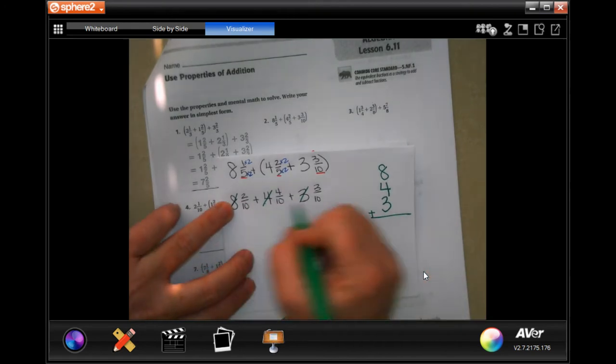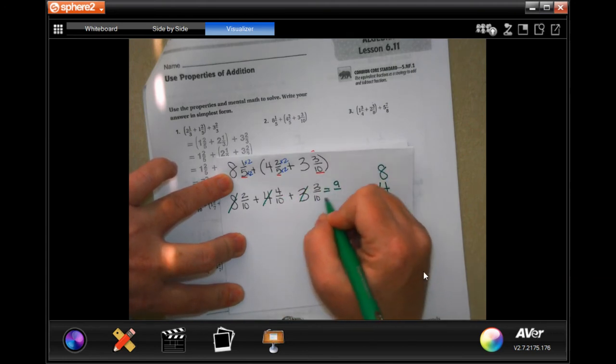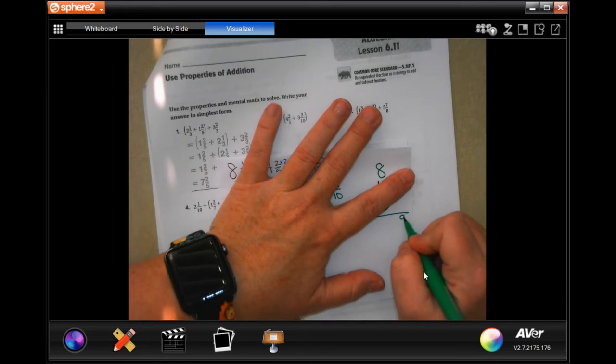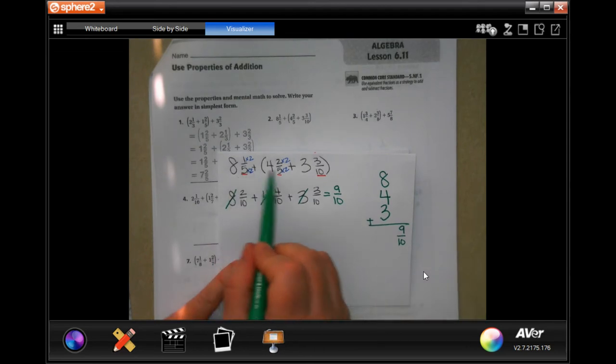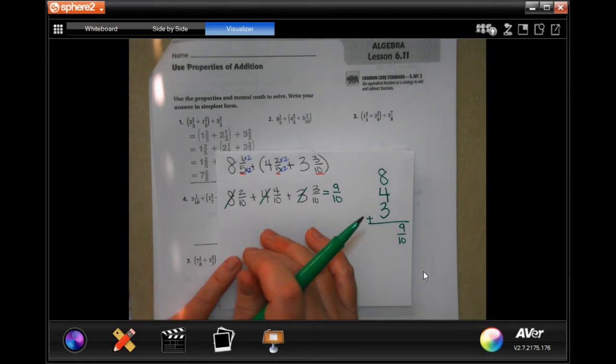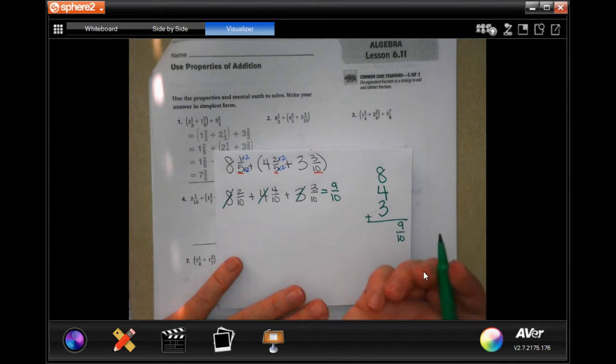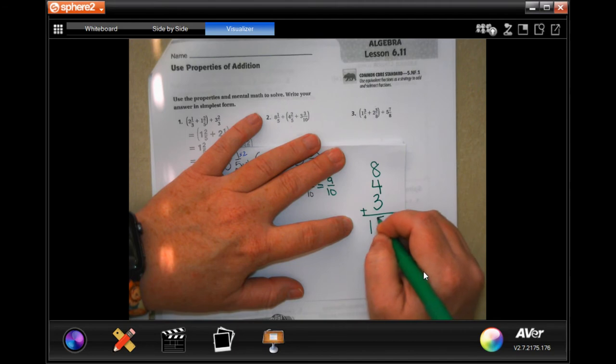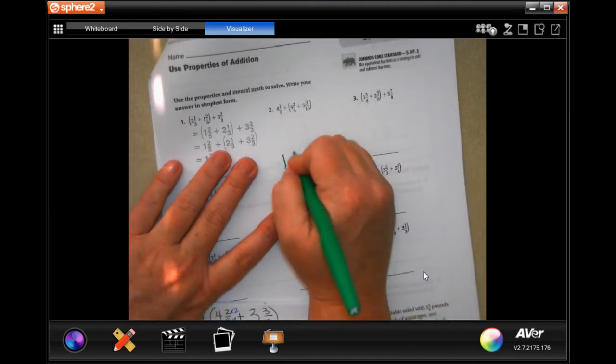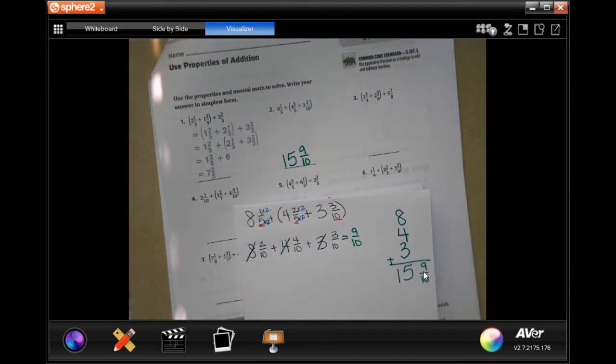Now, I'm going to take our whole numbers and I'm going to put them over here because I don't need them right now. I will add those up later. So now I just have 2 tenths, 4 tenths, and 3 tenths. Well, 2 plus 4 is 6, plus 3 is 9, and then I keep my denominator. I'm also going to share a little tidbit with you guys. When your only function is addition, I don't have subtraction or multiplication or division, you don't really need the parentheses, so I didn't bother putting them when I rewrote it. You don't have to add something first. If you're adding, it doesn't matter what order you add it in. So, 8 plus 4 is 12, plus 3 more is 15. 15 and 9 tenths, guys.